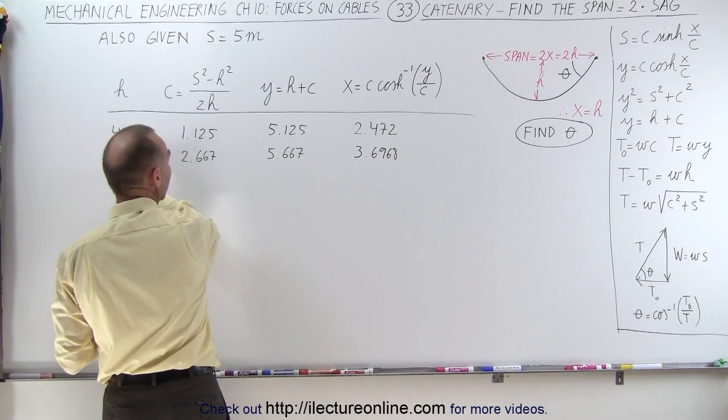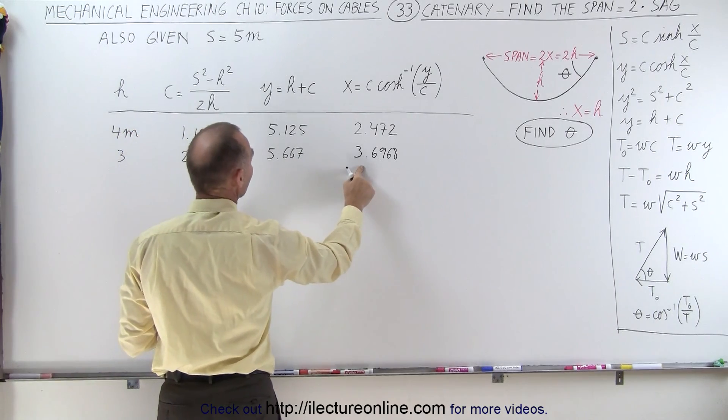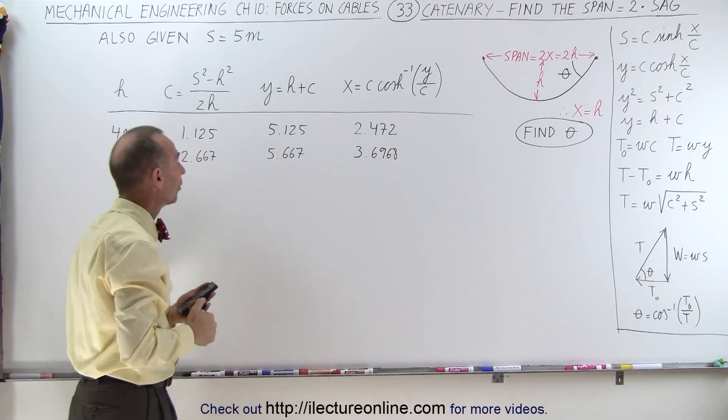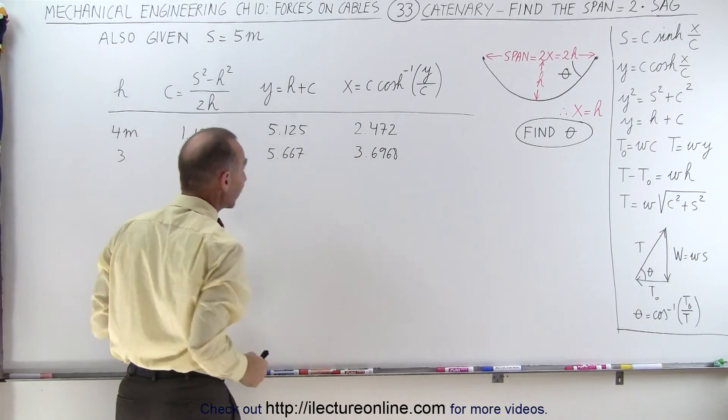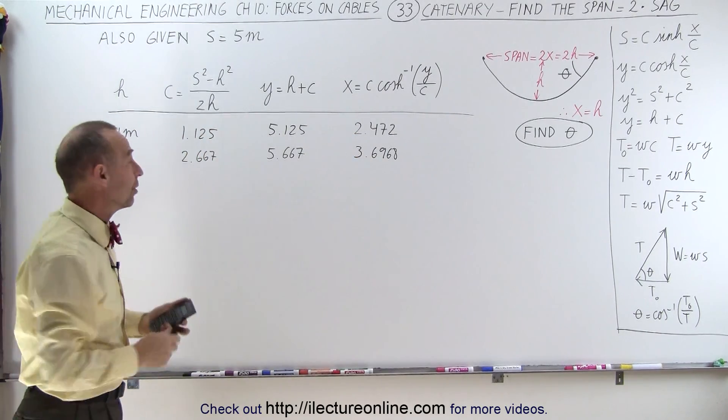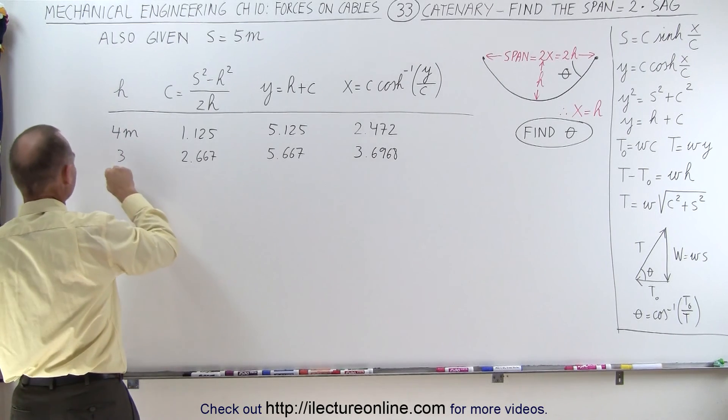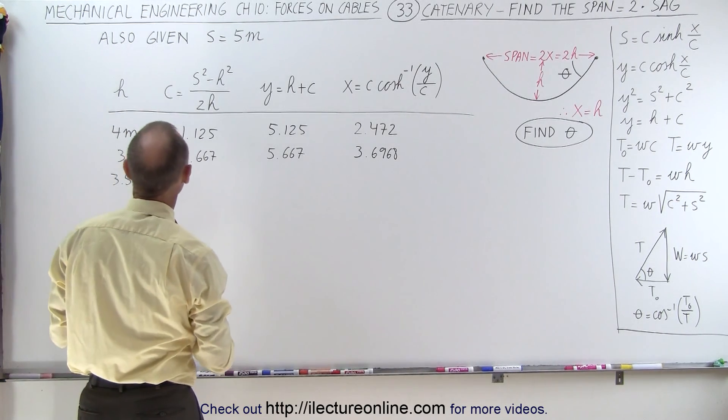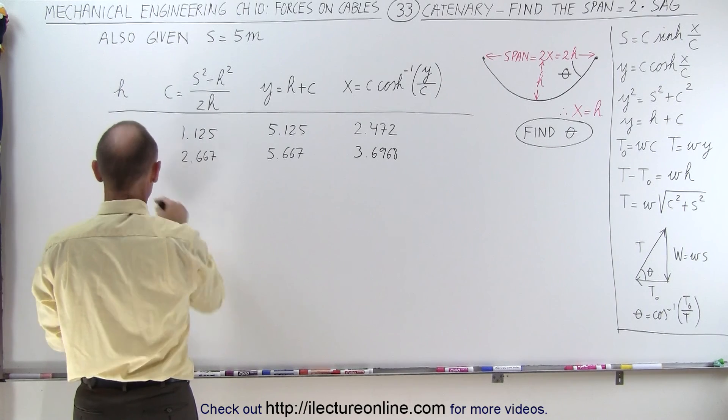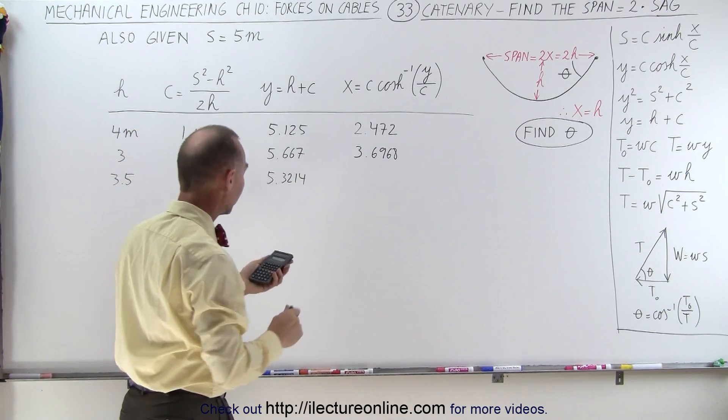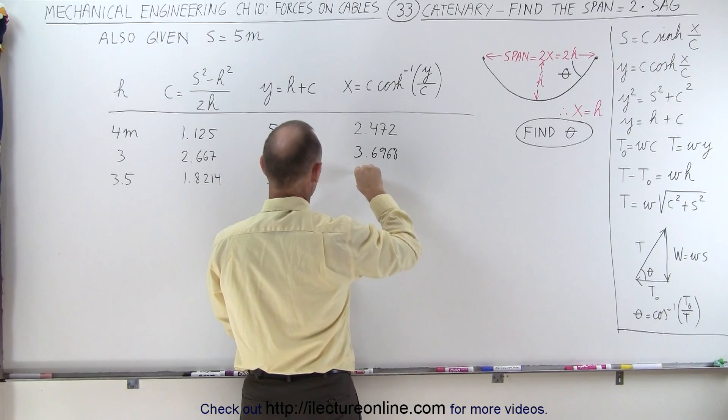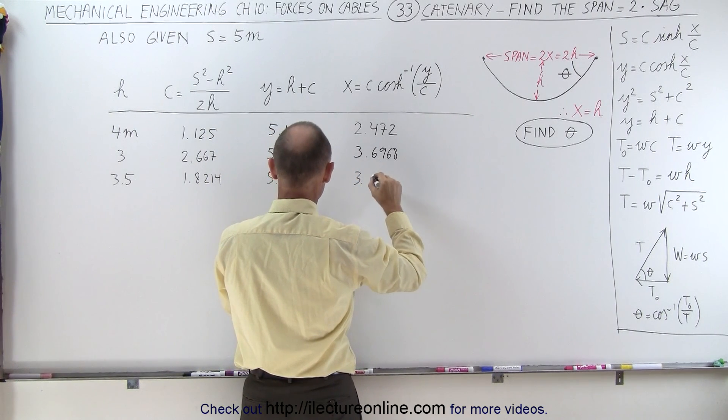So we have h equals 3, x equals 3.7 almost. So here we had x being smaller, now here we have x being bigger. So let's try the halfway point. Let's try 3.5. h is 3.5, we get 25, now we get 3.1594.